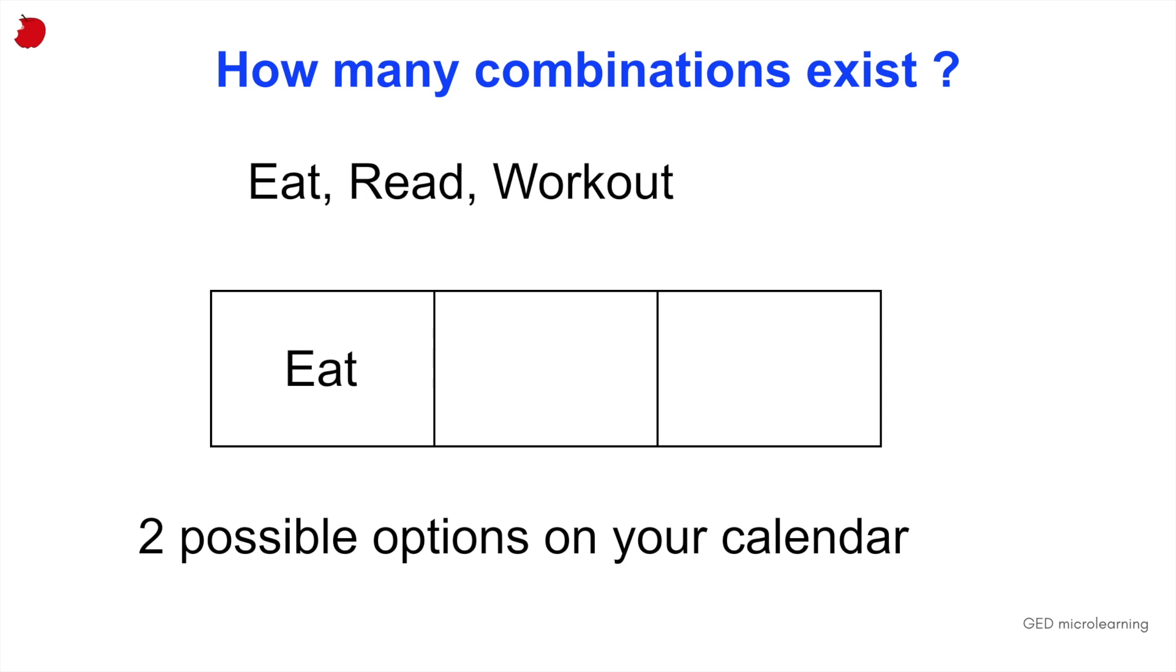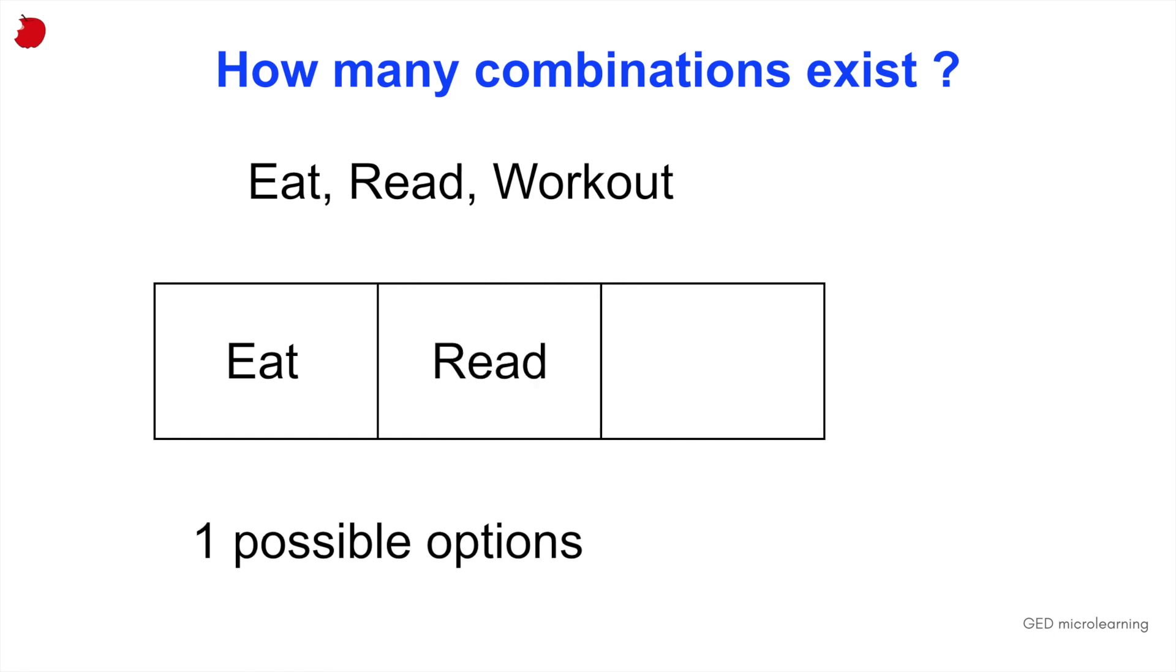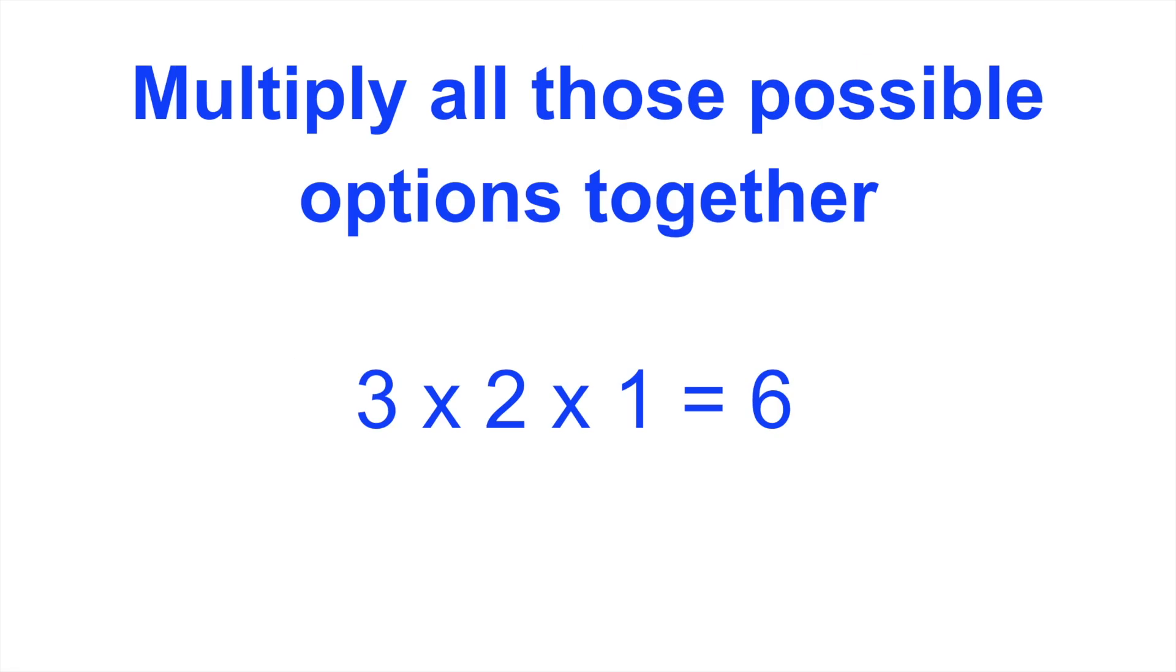And then let's say you decide to eat first. So now you have two slots left on your calendar for today. And then you decide to read after you eat. So now you only have one slot left on your calendar. So if you take all those possible options together, so you multiply three, which is the number of possibilities that you had initially in your calendar, or the number of slots available in your calendar. And then you multiply it by two, which is the second options that you had. And then you multiply it by one, you can see that you get six, which is the same number that we obtained when we did this manually.